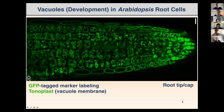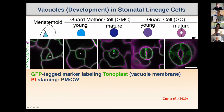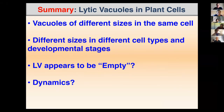There is a dominant and interesting cell type — the stomatal lineage cell. These single-cell development images, from young cells, show the green fluorescence labeling the tonoplast, and red color marking the cell wall and plasma membrane. In summary, what we know about vacuoles in plants: they can have different sizes in the same cell, different sizes in different cell types, and they may change size during development. Based on electron microscopy, we also know vacuoles can be dynamic — changing from big to small.